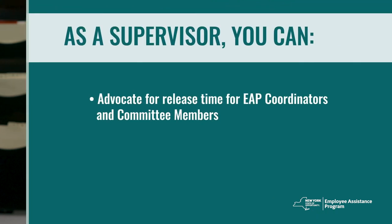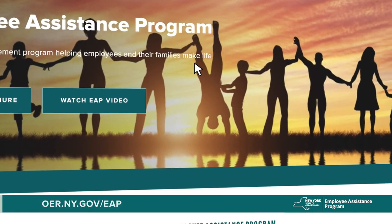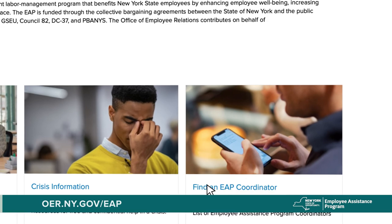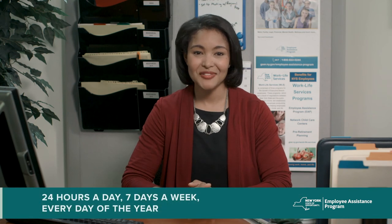As a supervisor, you too have a role in supporting and promoting your agency's EAP. You can advocate for release time for EAP coordinators and committee members, support wellness activities, and encourage participation in EAP promotional events. To find other ways EAP can help you and your employees, check out the EAP website, where you will find a list of problems we help struggling employees overcome, as well as contact information for each agency's EAP coordinators. Your EAP Coordinator would be happy to meet with you to answer any questions. You can also reach the New York State EAP main office by phone. And don't forget, you can also seek EAP services for situations occurring in your own life. EAP is a negotiated benefit available for all executive branch employees and their families, 24 hours a day, 7 days a week, every day of the year.